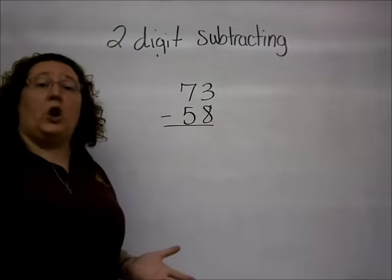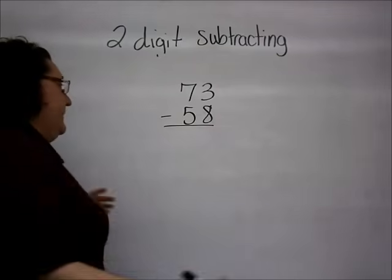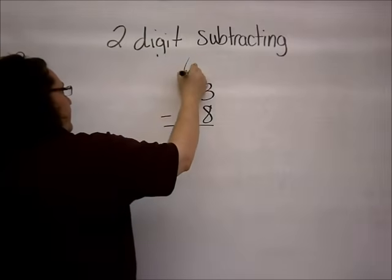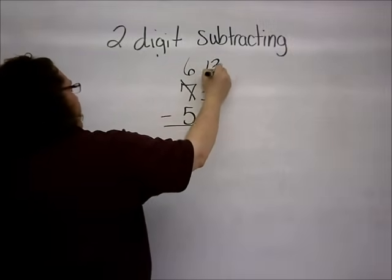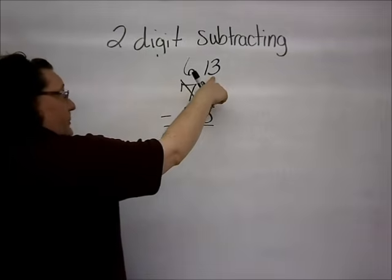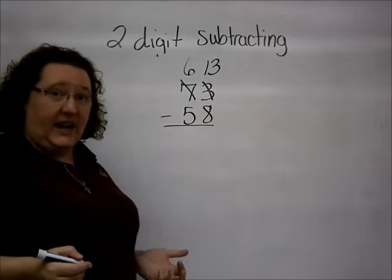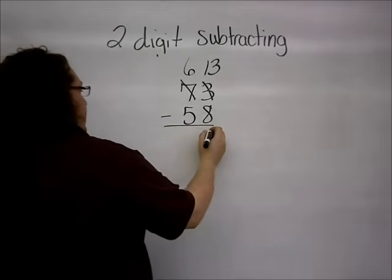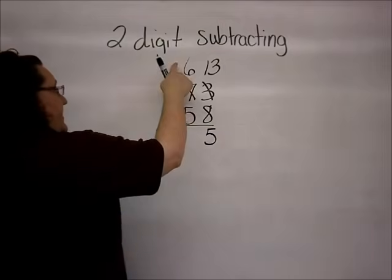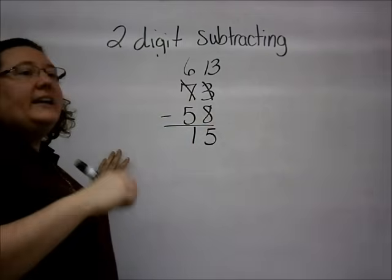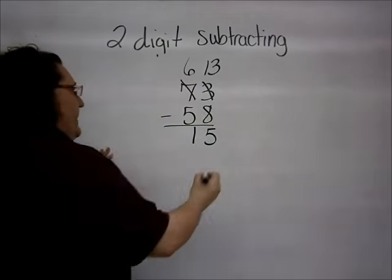Let's try it out. We're going to start with the traditional method first. Since the 8 is bigger than the 3, I have to borrow. I give the extra 10 to the 1's place. And now I end up with 13 minus 8. When I subtract 13 minus 8, I end up with 5. 6 minus 5 gives me 1.